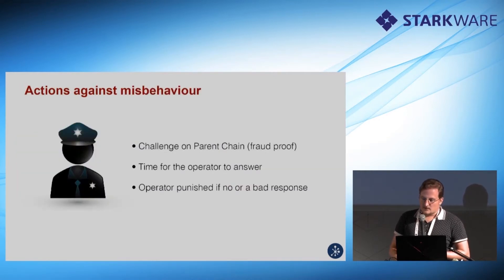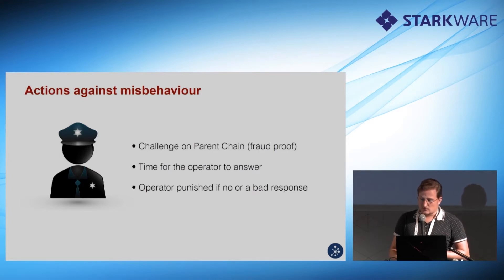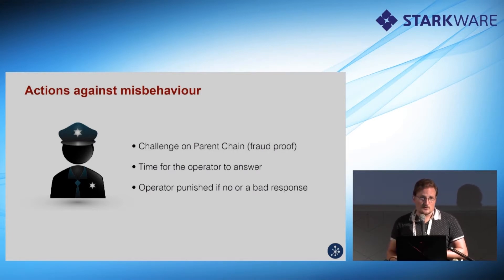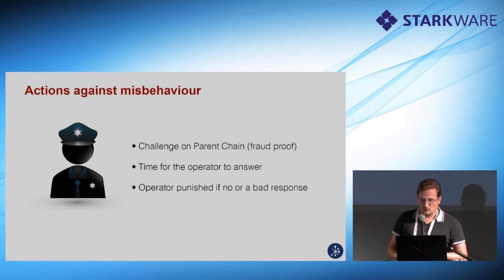Front running here would require the exchange to change the Merkle Mountain Range commitment, and this commitment is checkpointed at regular intervals to the on-chain smart contract, where Mikaela can prove maleficence later on. It's really about building trust. The operator can decrypt the order in T seconds; if it takes Mikaela T seconds to receive the MMR receipt, front running can happen. If the exchange does anything malicious, we can resort to the on-chain smart contract and challenge the operator — for example, there can be slashing of a certain deposit.